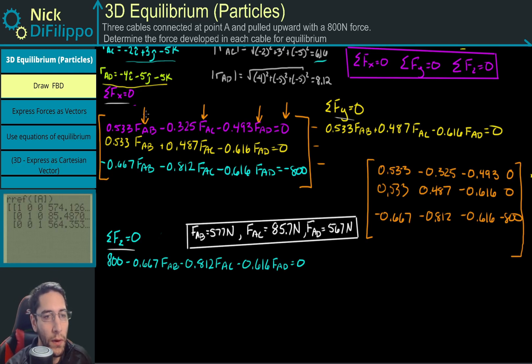I get a bunch of ones and zeros: 1, 0, 0, 0, 1, 0, 0, 0, 1. And then this: 574.1, 85.4, and 564.3. These are going to align with the different rows that we have.